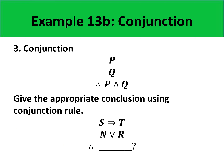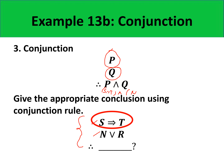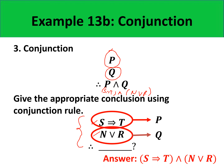Applying conjunction to the following problem — what should be the correct conclusion? Here, S implies T takes the role of P, and N or R takes the role of Q. So our conclusion would be: S implies T, and the quantity N or R.